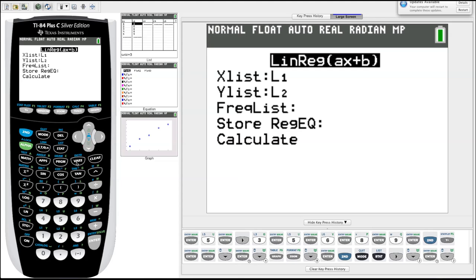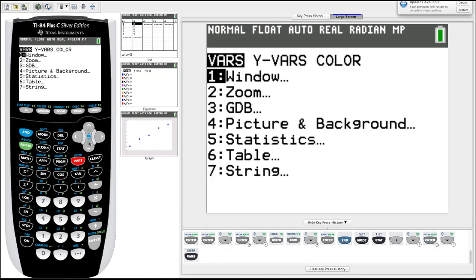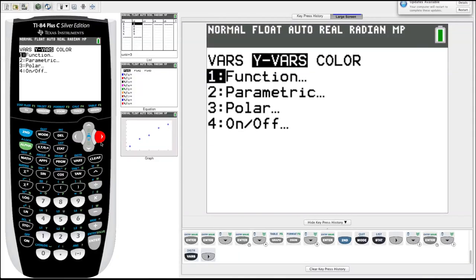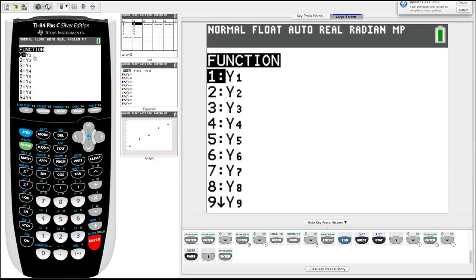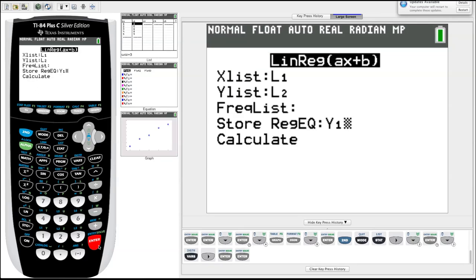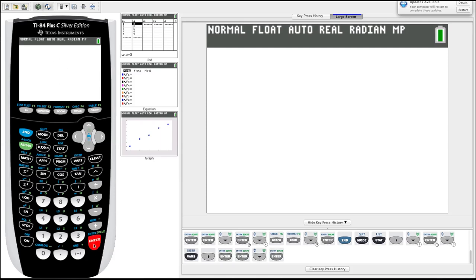Arrow over to y variables, hit into function, and then it produces our possible where to enter it, y1, y2. We'll just enter it into y1. That's fine. So now it's going to store the equation, the linear equation into y1. Let's hit down to calculate.